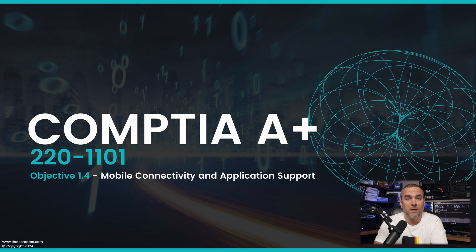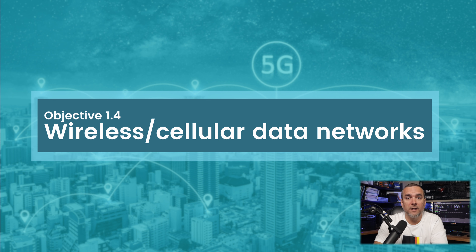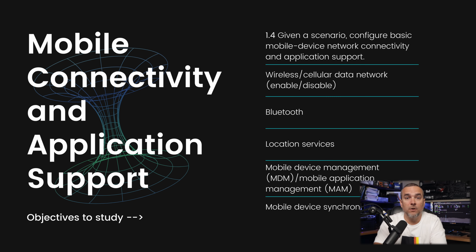Hello everyone and welcome to my CompTIA A+ 1101 video series. In this video I will cover part of objective 1.4, mobile connectivity. We will review wireless and cellular data networks including how to enable and disable them, the various connections starting at 2G and ending at 5G, hotspots, and preferred roaming lists or PRL updates. We will also compare GSM with CDMA, and finish up with Bluetooth device pairing and connectivity.